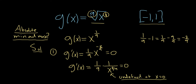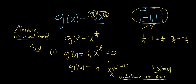Why is that important? Critical numbers are numbers in the domain of the function — in this case between negative 1 and 1 — where the derivative is 0 or where it's undefined. Because the derivative is undefined at 0, and 0 is between negative 1 and 1, x equals 0 is going to be a critical number. Critical numbers are numbers in the domain of the function where the derivative is 0 or undefined, so we make note of that.